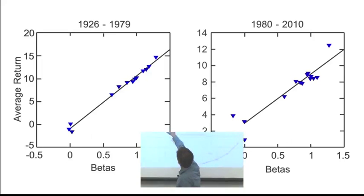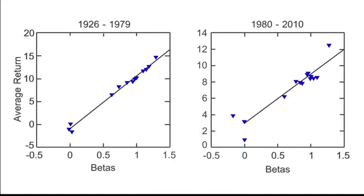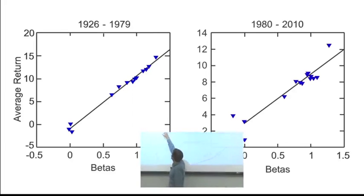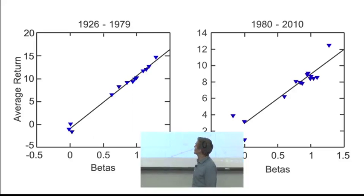So the little triangles off on the right, those are 10 portfolios of stocks. The small stocks are off on the right, and the big stocks are on the left. For reference, I have three kinds of bonds here, treasury bills, long-term government, and long-term corporate bonds.